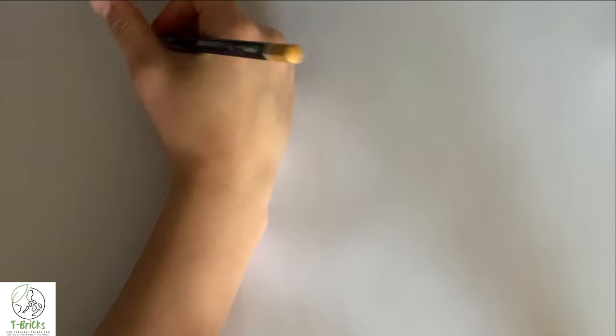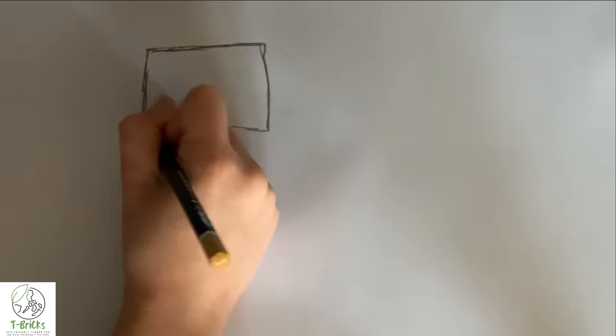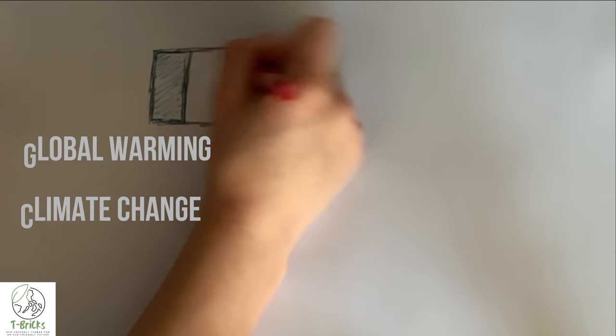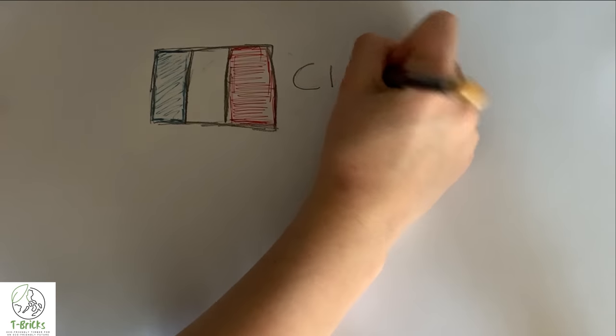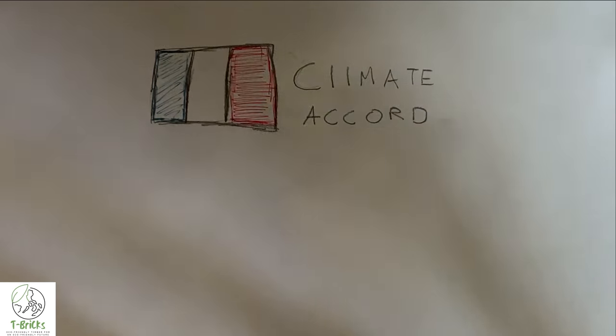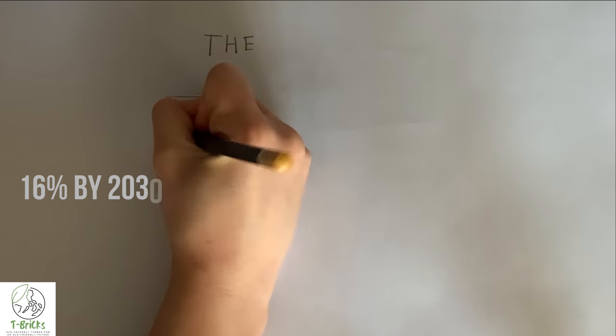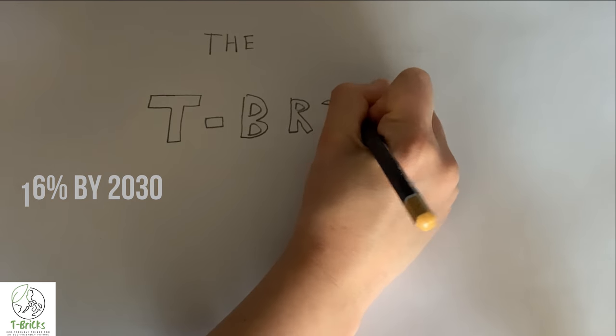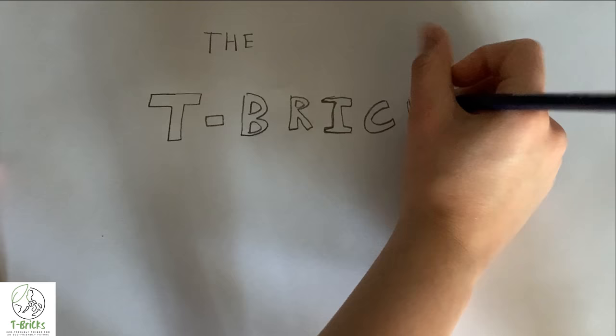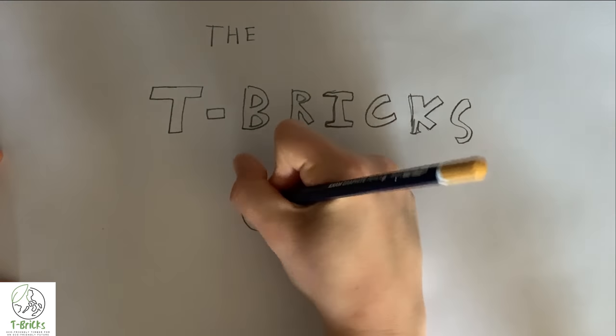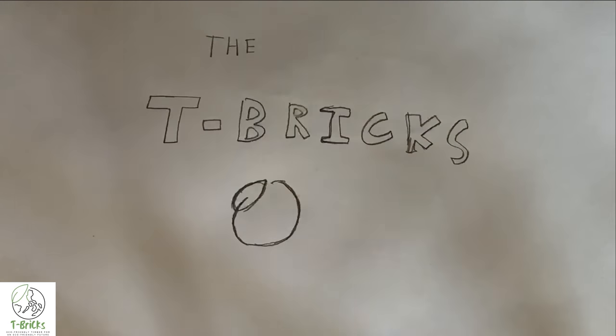Our world is constantly battling many futuristic threats such as climate change and global warming. However, these threats aren't as futuristic as they seem. Australia, through its commitments in the Paris Climate Accord, has agreed to reduce its carbon emissions by 16% from concrete by the year 2030. The T-Bricks are one simple and effective way to help contribute to this and a brighter and healthier future.